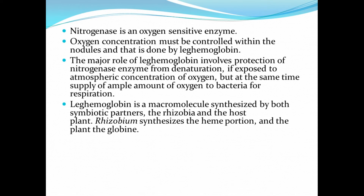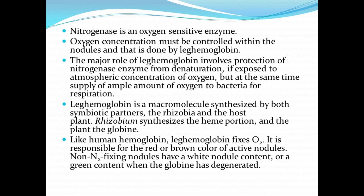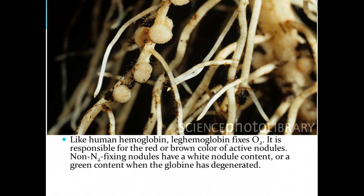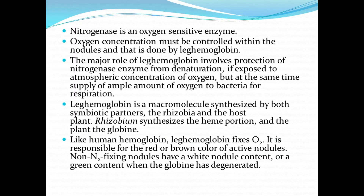Leghemoglobin is a macromolecule synthesized by both symbiotic partners — the Rhizobia and the host plant. Rhizobium synthesizes the heme portion and the plant the globin. Just like in humans, leghemoglobin binds oxygen. It is responsible for the red or brown color of active nodules. Non-nitrogen-fixing nodules have a white or green nodule content when the globin has degenerated.